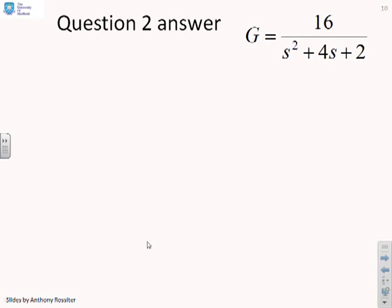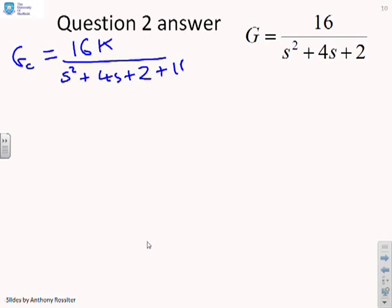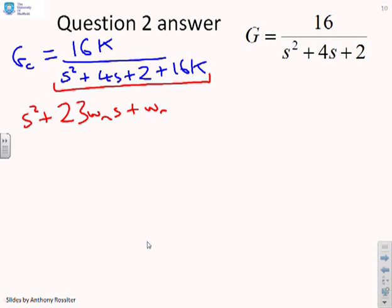All right. So this question was focused on damping. So first of all, let's write the closed-loop transfer function as ever. So we've got GC equals 16K over s squared plus 4s plus 2 plus 16K. And this denominator, we want to write in our standardised form as s squared plus 2 zeta omega n s plus omega n squared. Now, the first question said, set zeta equal to 1. So how are we going to do that?